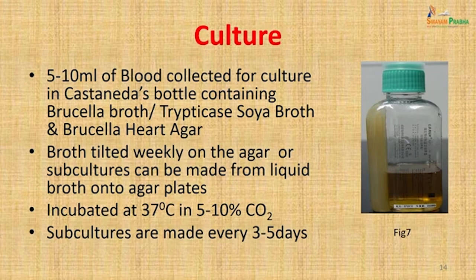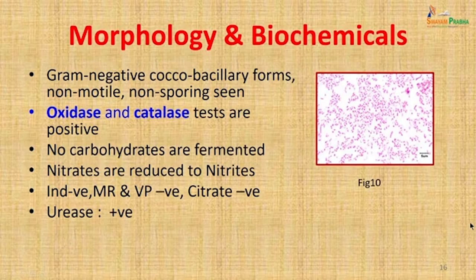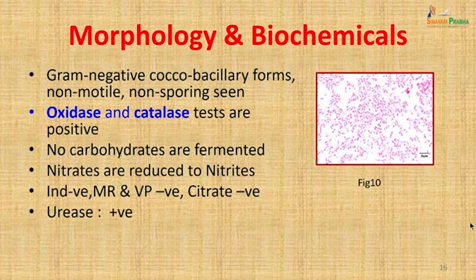Subcultures were also made onto agar plates to examine colonies. It was incubated at 37°C in 5-10% CO₂; subcultures were made every 3 to 5 days on the agar slope only. When colonies were seen on the agar slope, subcultures were attempted onto other media including sheep blood agar, on which colonies of 48 to 72 hours were punctate and non-hemolytic. A smear from these colonies showed the organism was gram-negative, coccobacillary, non-motile, and non-sporing. It was oxidase and catalase positive, no carbohydrates were fermented, nitrates were reduced to nitrites, indole was negative, MR/VP were negative, citrate was negative, but urease was positive.